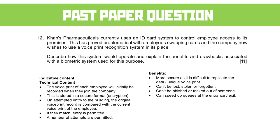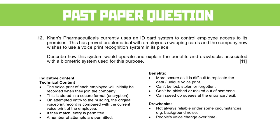You can speed up queues at the entrance or exit if it's all going well, but the system is not always reliable. If there's even a bit of background noise — like smart assistants getting confused in a noisy environment — the system can fail. People's voices also change over time as you age, so you'd need to update your voice print regularly to make sure it's always current.